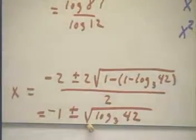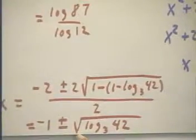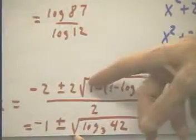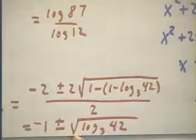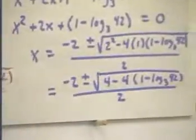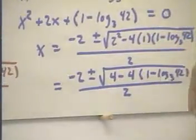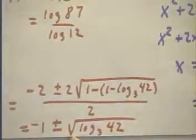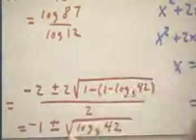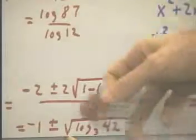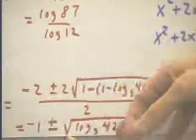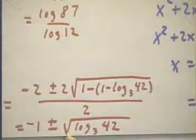And that's exactly what we do here. When we factor out the 4, 4 factors out of 4 and leaves us 1, and it factors out of 4 times the quantity 1 minus log 3 of 42 and leaves us just 1 minus log 3 of 42. And then we simplify that by dividing by 2. We end up with negative 1 plus or minus the square root of log base 3 of 42.